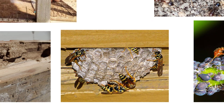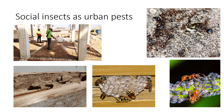In conclusion, social insects have a distinct caste system, cooperative brood care, and overlapping generations, making them some of the most successful insects out there.